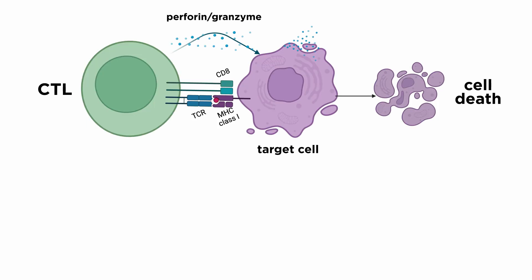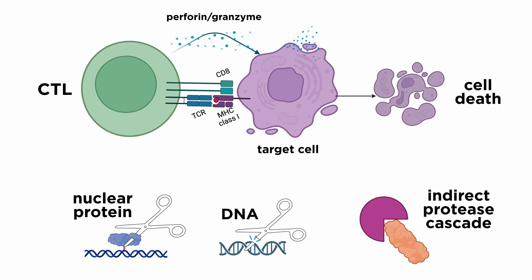Cytotoxic T cells kill their targets via two major pathways. First, there is perforin-granzyme-mediated lysis. The CTL produces perforin, which is a membrane-disrupting protein. Along with a family of serine proteases, or granzymes, together they form the bulk of lytic granules within the cells. Perforin forms a pore that disrupts the target cell membrane, and once inside the target cell, granzymes initiate cell death. The mechanism of action of granzymes is direct cleavage of substrates, such as nuclear proteins and DNA, or indirect action via a protease cascade.